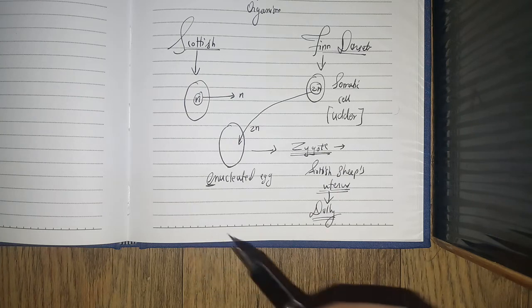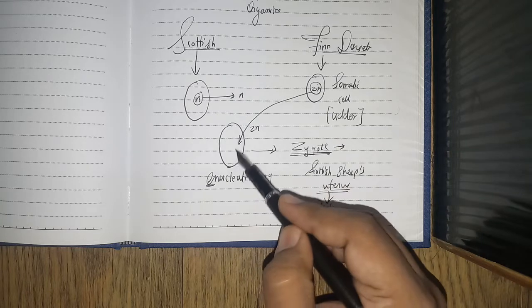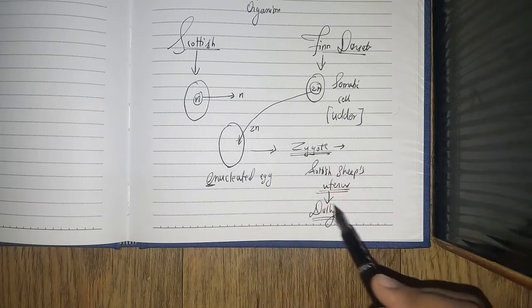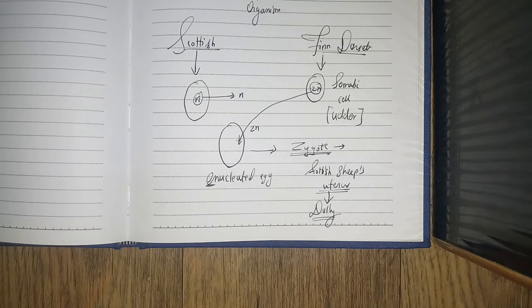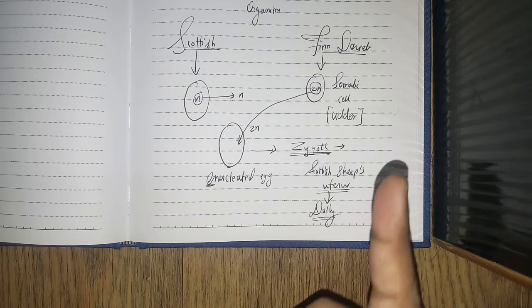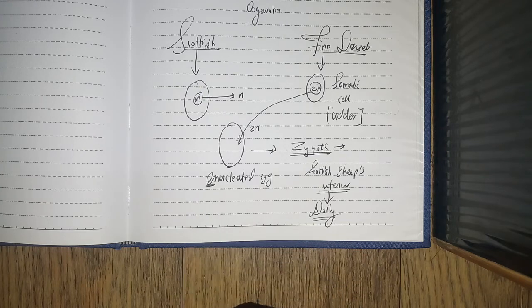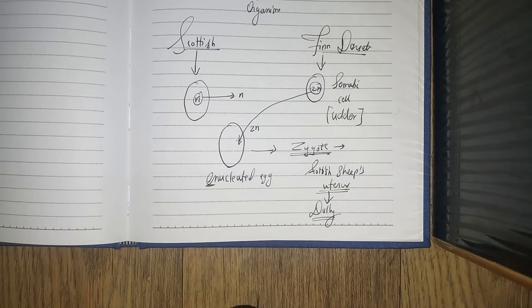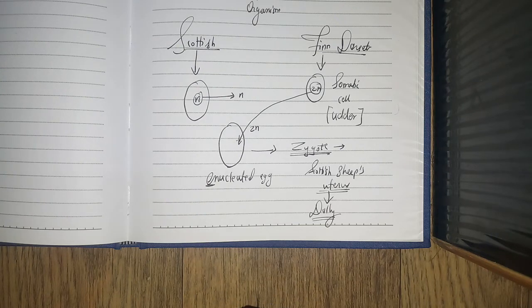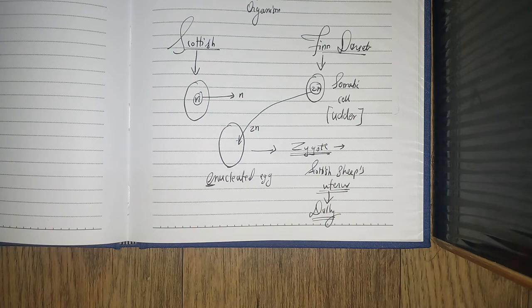Because all the chromosome material, all the nuclear material in Dolly is of Finn Dorset. That's the reason why the actual mother - if we get DNA fingerprinting of Dolly, we'll come to know that it's actually Finn Dorset. Remember this interesting question. So Finn Dorset is the mother. Scottish sheep acts as a surrogate mother. Surrogacy is an important topic. Okay, just simple. To your best, bye.